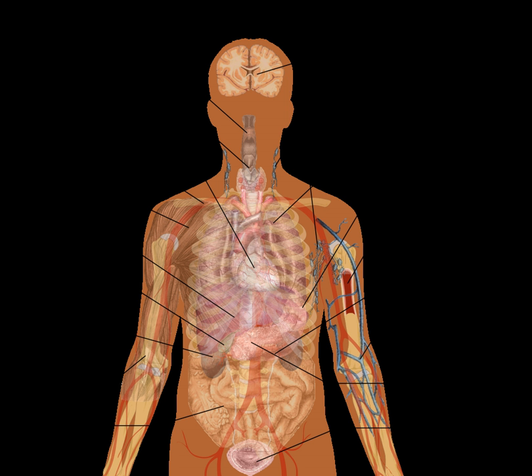Two or more organs working together in the execution of a specific body function form an organ system, also called a biological system or body system. The functions of organ systems often share significant overlap. For instance, the nervous and endocrine system both operate via a shared organ, the hypothalamus. For this reason, the two systems are combined and studied as the neuroendocrine system. The same is true for the musculoskeletal system because of the relationship between the muscular and skeletal systems.